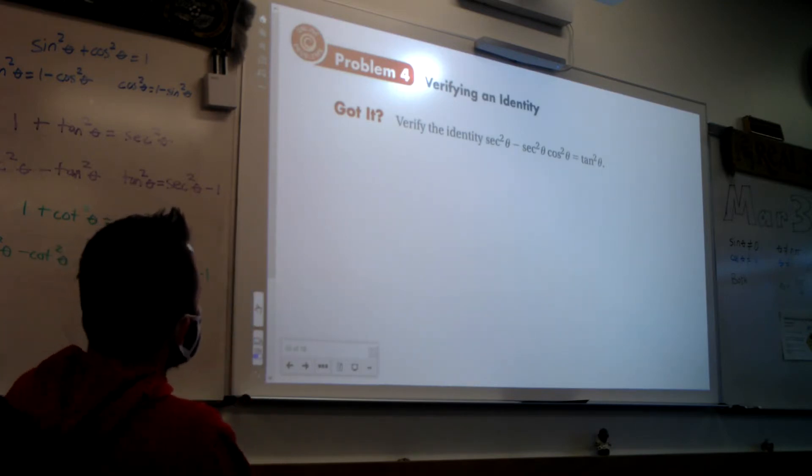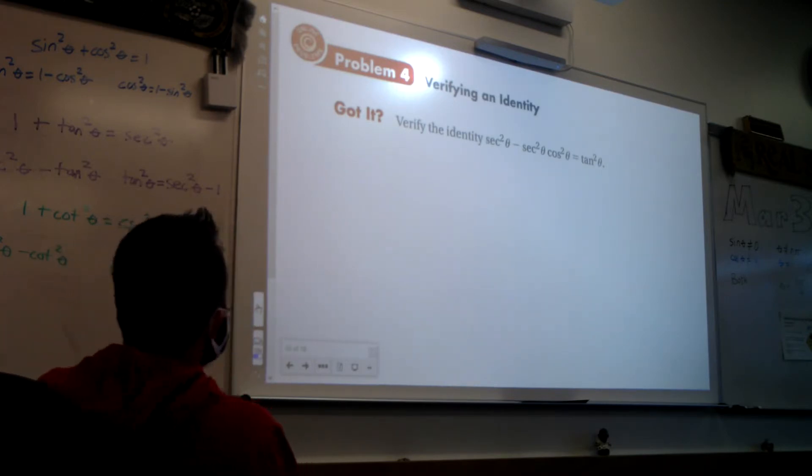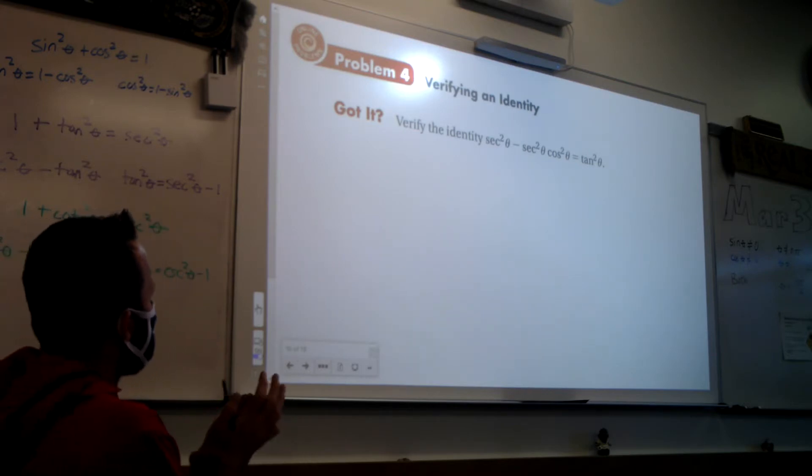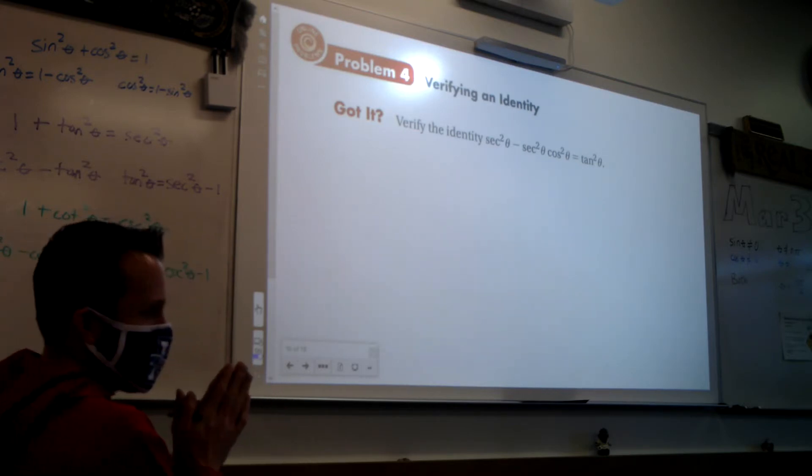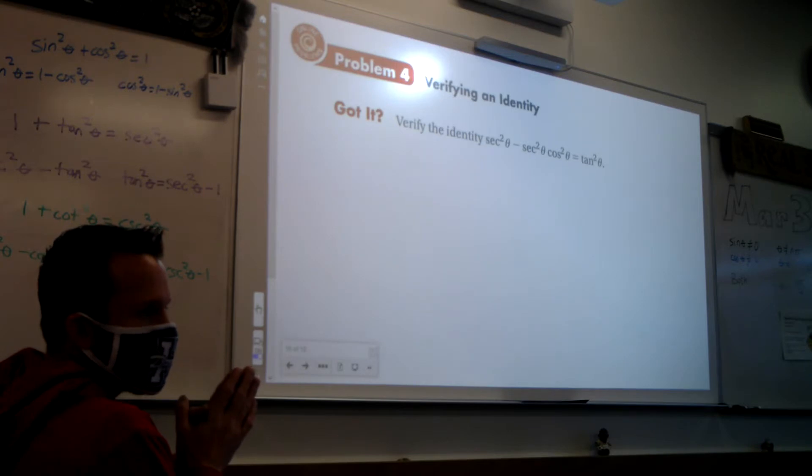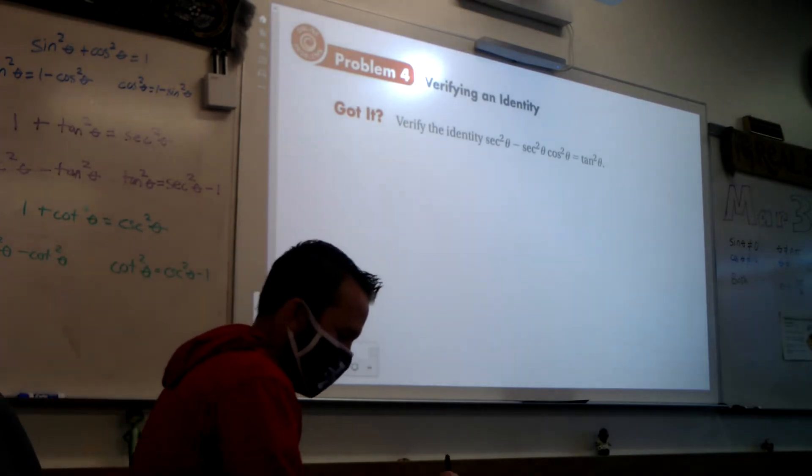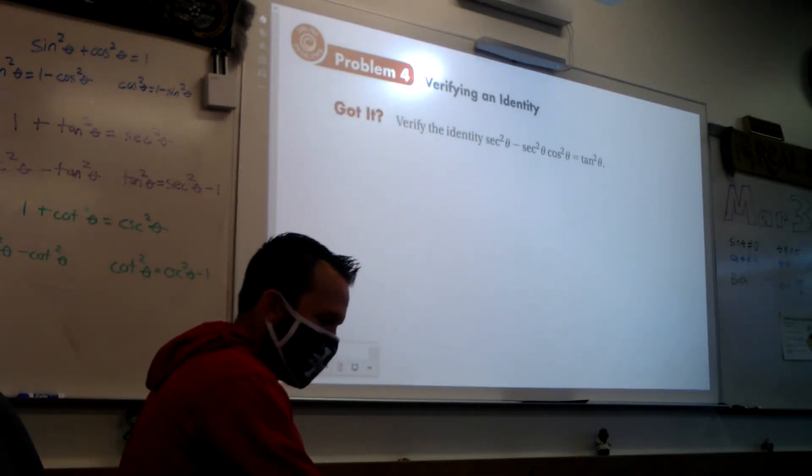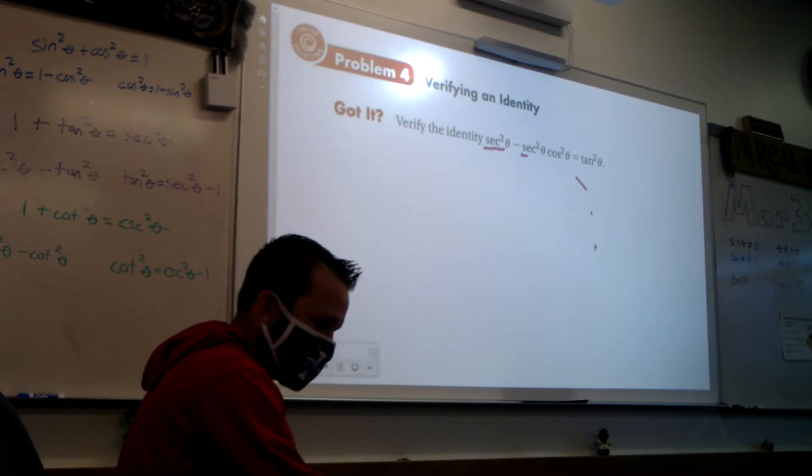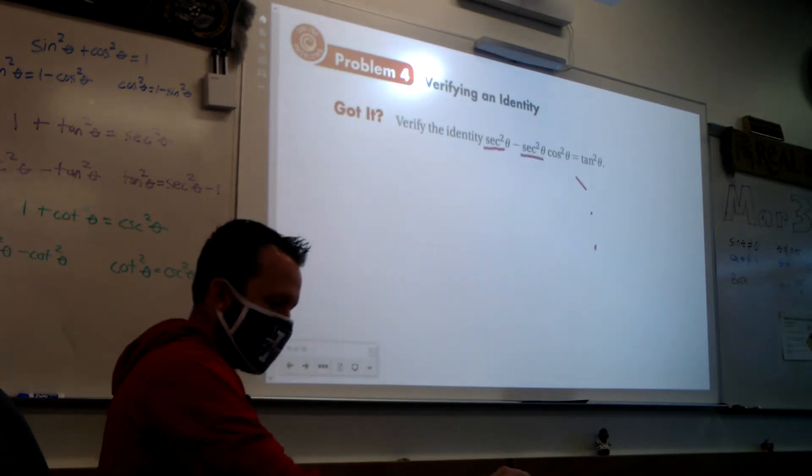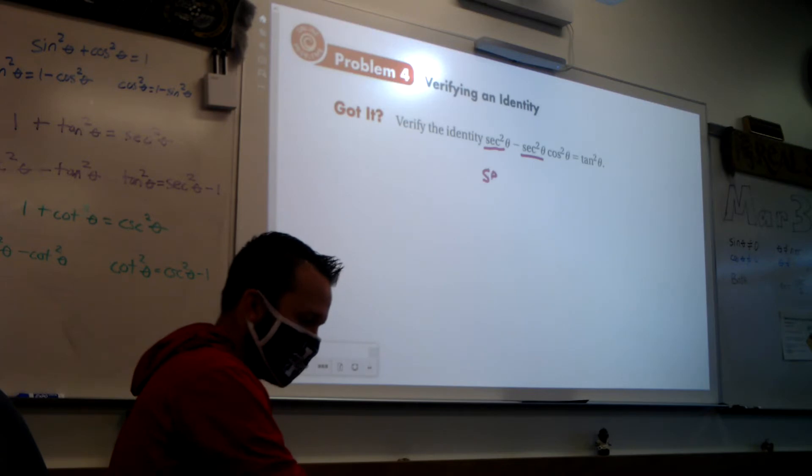Now, looking at it, I don't really see anything going on here. But what do you notice on the left that they both have in common? Could you factor out a secant squared? Sure, let's try it. I notice that they both have a secant squared, so I'm going to factor that out. When I take out the secant squared, I get 1 minus cosine squared theta.